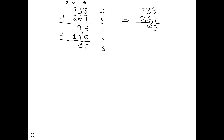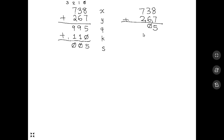Now we're on to column 2: 7 plus 2 is 9, and 9 plus 1 is 10 — a 0 with a carry of 1. In the conventional way on the right-hand side, 7 plus 2 is 9, and 9 plus the carry from column 1 gives us a 0 with a 1 carried over. Looking at the left-hand side more carefully, the spelled-out method of performing multi-digit addition is just a more redundant version of the usual approach.